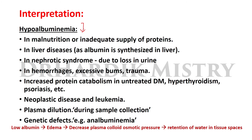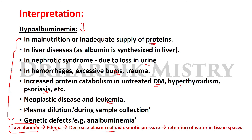When the albumin level is decreased, the condition is known as hypoalbuminemia. Causes include: malnutrition or inadequate supply of proteins; liver disease, as albumin is synthesized in the liver; nephrotic syndrome, due to loss in the urine; hemorrhages; excessive burns and trauma; increased protein catabolism in untreated diabetes mellitus; hypothyroidism; psoriasis; neoplastic disease and leukemia; plasma dilution during sample collection; and genetic disease, e.g. analbuminemia. Low albumin values result in edema, as there is decreased plasma colloid osmotic pressure, leading to retention of water in the tissue spaces.